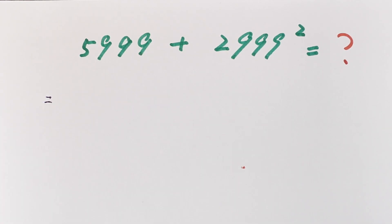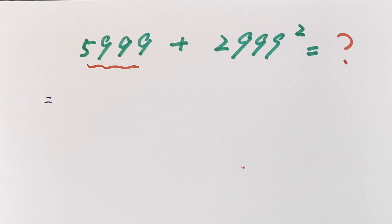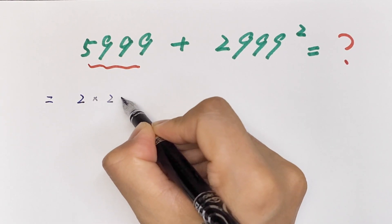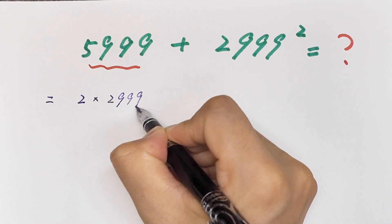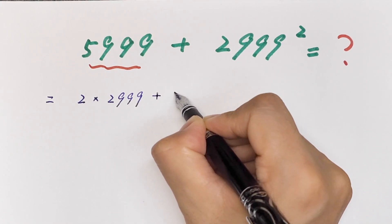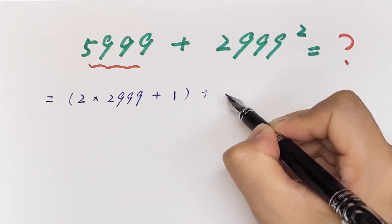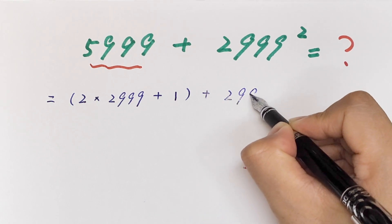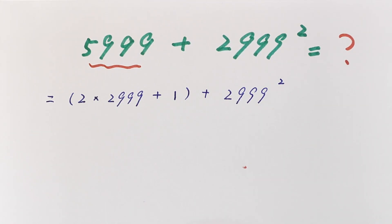It will be equal to, this is the same as 2 times 2999 plus 1 in brackets, plus 2999 square. Okay, next step.